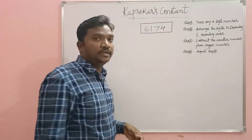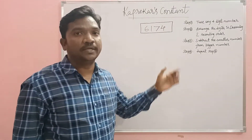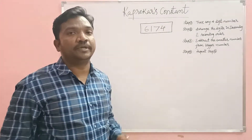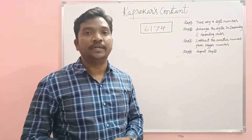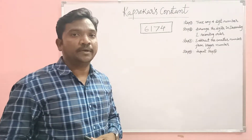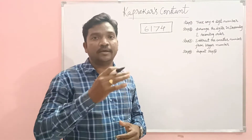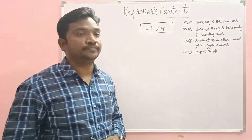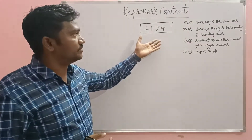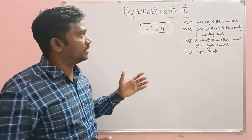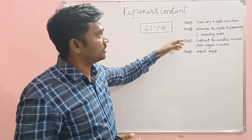6174 is known as Kaprekar's Constant, named after the famous Indian mathematician D.R. Kaprekar — Dattatreya Ramachandra Kaprekar. So what is the mystery behind this number? Let us understand some steps before that.